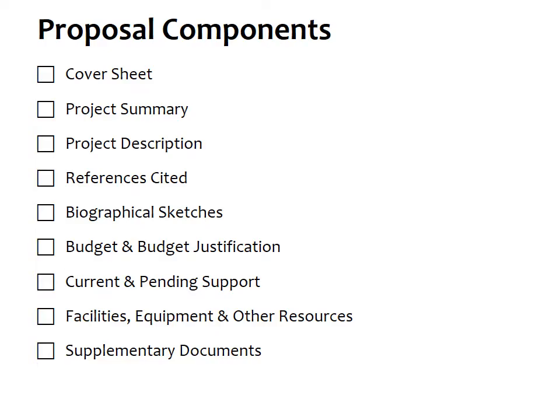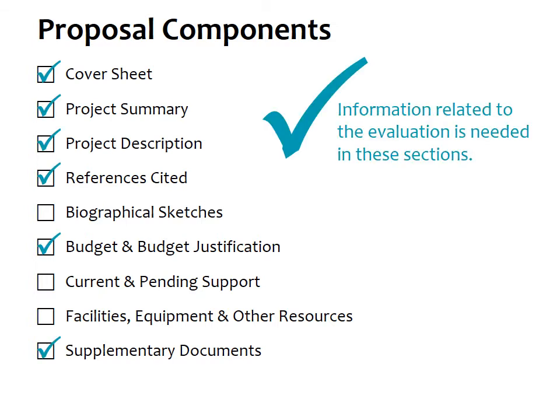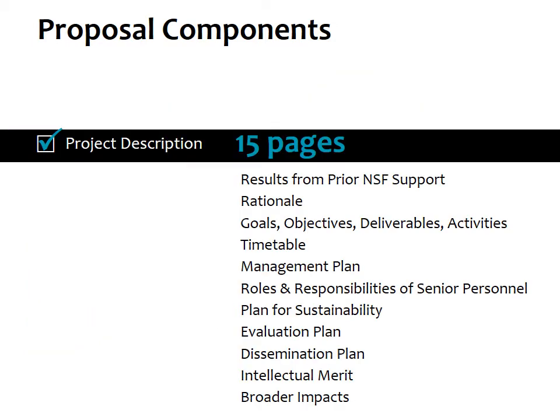Here are the required elements of an NSF proposal. The check marks identify the parts where there should be information related to evaluation. We won't get into the details of all of these sections in this video series — we're just going to focus on the project description. This is the main part of your NSF proposal, and it can be up to 15 pages long. The contents listed here are based on guidance from the ATE Program Solicitation and the NSF Proposal Guide.